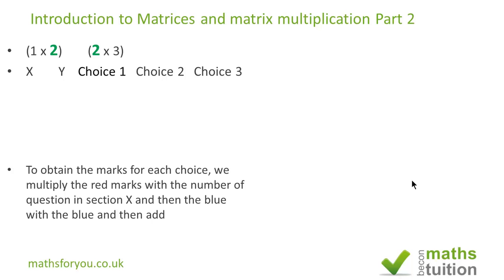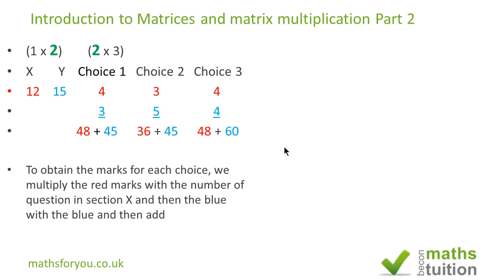Moving on, we need to find how many marks she scored in each section. To do that, for instance, we multiply 12 by 4, because each question in section X has 12 marks and she answered 4, so we do 12 times 4 to get 48. Similarly, each question for section Y is worth 15 marks, and because she proposes to do 3 questions, we do 15 times 3 to get 45. So for choice 1 we have 48 plus 45, then for choice 2 we have 36 plus 75, and for choice 3 we have 48 plus 60.